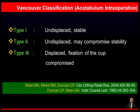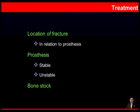Treatment is basically based on the location of the fracture in relation to the prosthesis. Then we look at the prosthesis itself — whether it is stable or unstable. And thirdly, we look at the bone stock, whether it is adequate or inadequate, to decide the line of treatment.